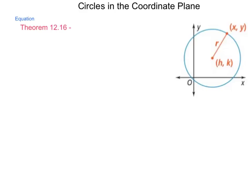Now we're going to begin with talking about circles themselves and how we can graph them or write the equations for them. Theorem 12.16 tells us an equation of the circle with center at (h, k) and radius r is (x - h)² + (y - k)² = r².